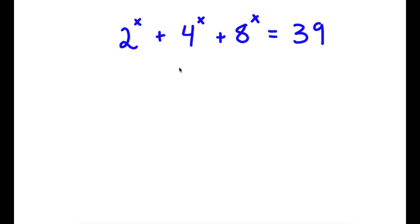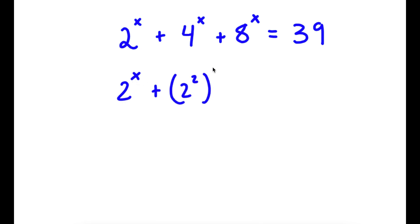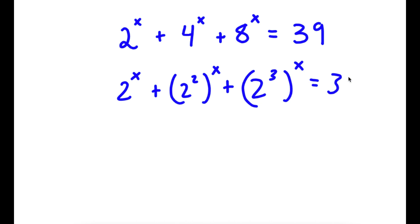So in this problem, I have 2 to the power of x plus 4 to the power of x plus 8 to the power of x is equal to 39. To solve this, I'm going to first rewrite this as 2 to the power of x plus 2 squared to the power of x plus 2 to the power of 3 to the power of x is equal to 39.